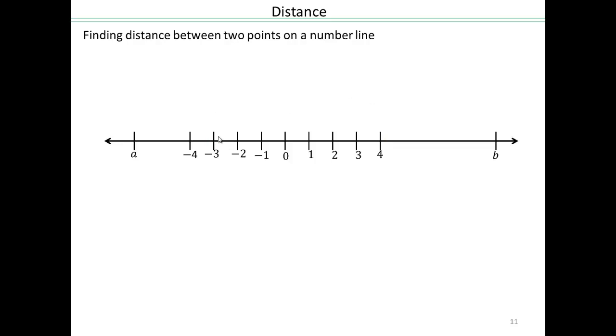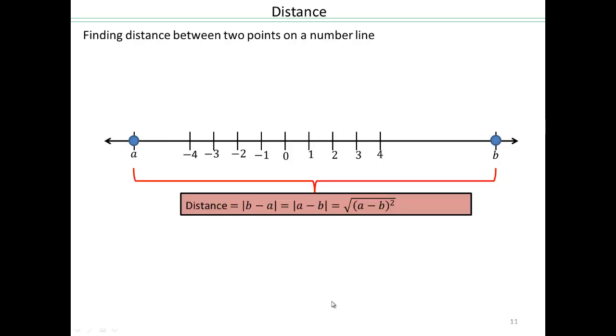Generically then, if you have two points at a and b, how do I get that? I can do b minus a, or I can say absolute value a minus b. Either way, it's going to turn out to be the same positive number, distance between them.